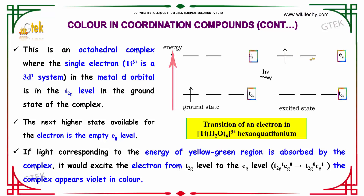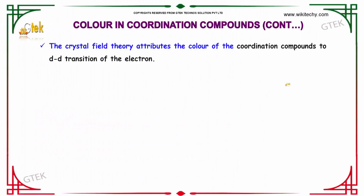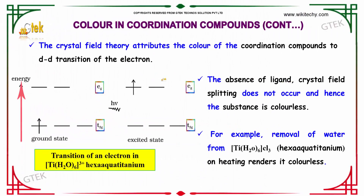So the crystal field theory attributes the color of the coordination compound to d-d orbital transition of the electron. In the absence of ligands, the crystal field splitting does not occur and hence the substance is colorless. For example, the removal of water from the hexaaqua titanium complex on heating renders it colorless.